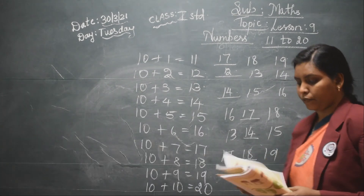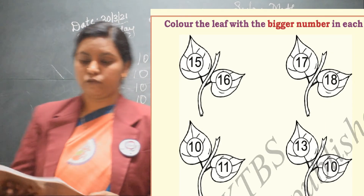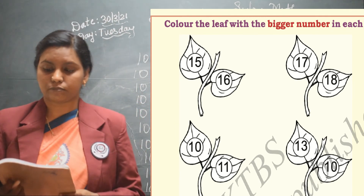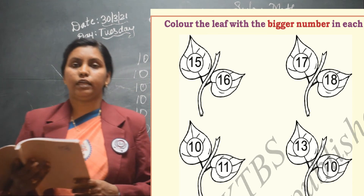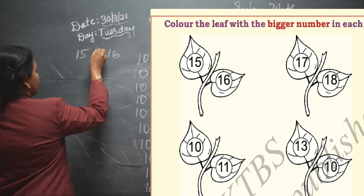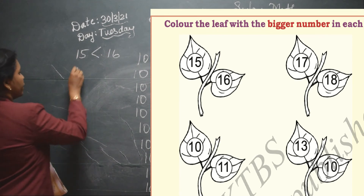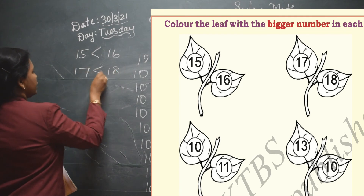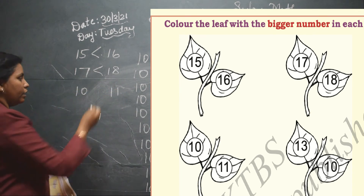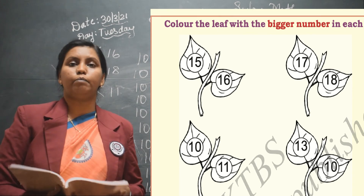On page number 114 they have given you the activity of coloring the leaf with the bigger number in each pair. The first pair of leaves is 15 and 16 — 16 is the greater number. Next pair is 17 and 18 — 18 is the greater number. Then 10 and 11 — 11 is the greater number, so you have to color the leaf bearing the number 11.